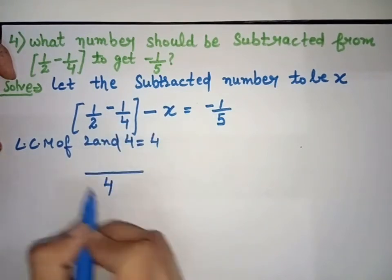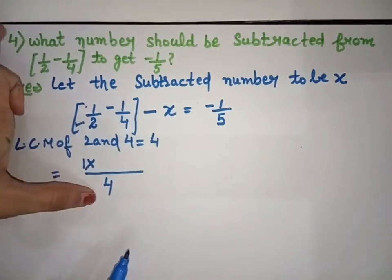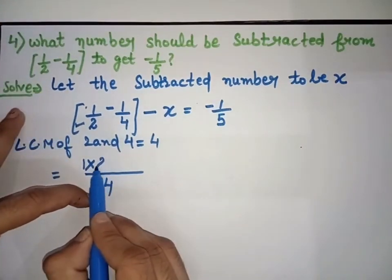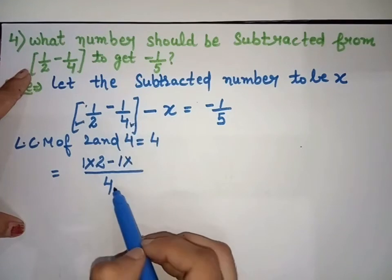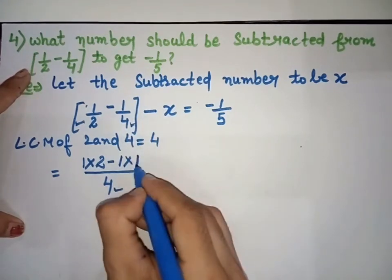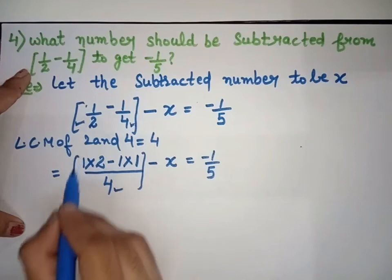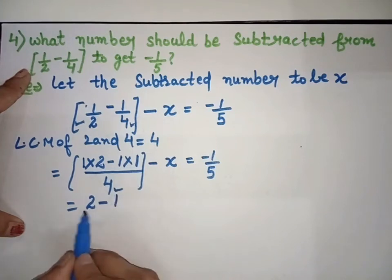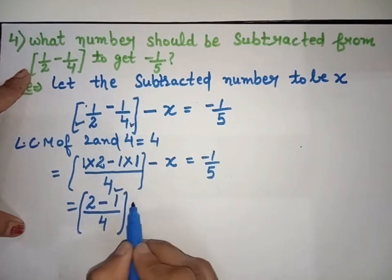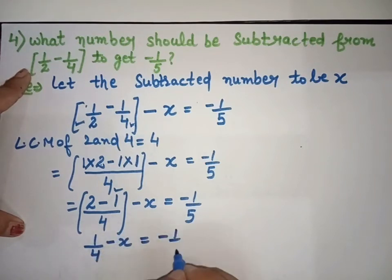LCM is 4. For the first term, numerator 1, divide 4 by 2 gives 2, multiply: 2. For the second term, numerator 1, divide 4 by 4 gives 1, multiply: 1. So we get: 2 minus 1 over 4 inside the bracket, then minus x equals minus 1 over 5. That gives: 1 over 4 minus x equals minus 1 over 5.